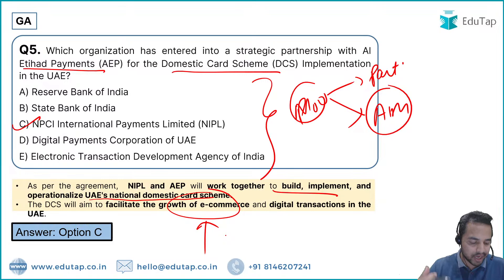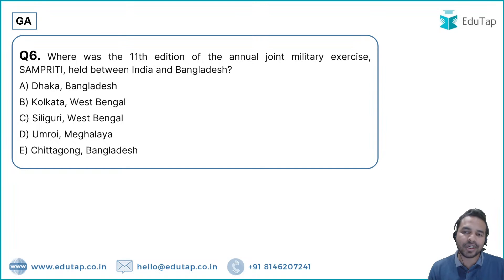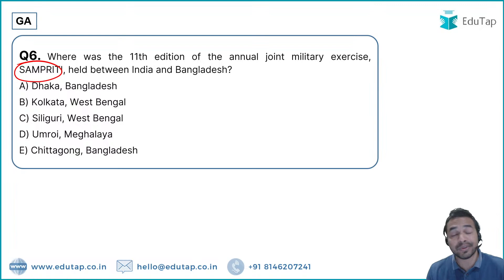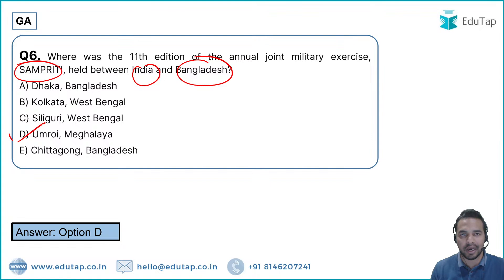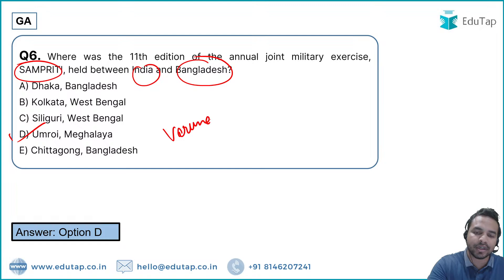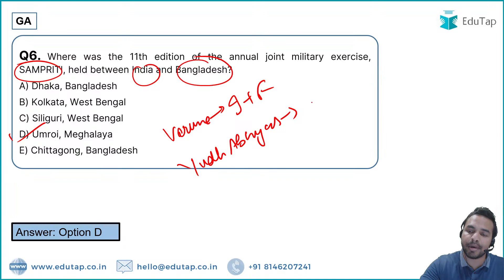Question 7 is on defense exercises. The Sampriti exercise, in its 11th edition, is conducted between India and Bangladesh. The venue for this year's edition was Umroi, Meghalaya. Also note that Exercise Varun was conducted between India and France, and Yudh Abhyas exercise was conducted between India and USA.